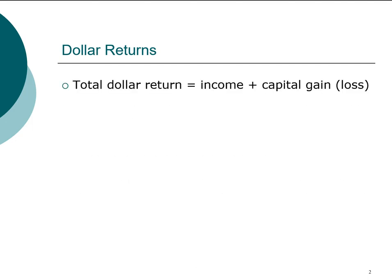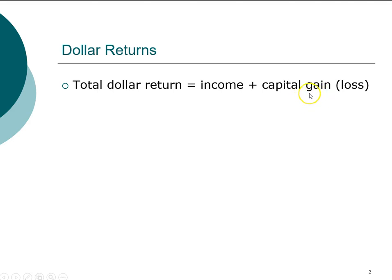We're going to walk through the definitions of return relatively quickly. First, we'll talk about returns in dollar terms, focusing on two components. The first is an income component, which is recurring — as long as we own the asset, whether stock, bonds, or a business, we continue to receive income. The second component arises when we liquidate our investment: we expect either a capital gain or, if we lose money, a capital loss.